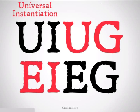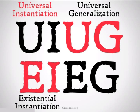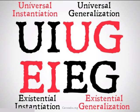We'll represent universal instantiation with UI, universal generalization with UG, existential instantiation with EI, and existential generalization with EG. In this video, we will take a look at these rules and some examples of each of them in both symbolic and word form. Let's take a look.